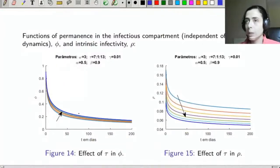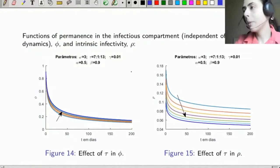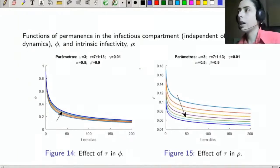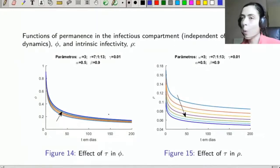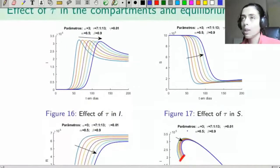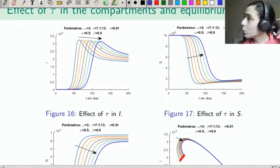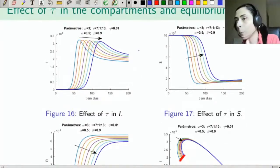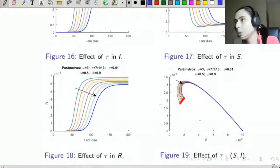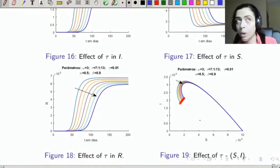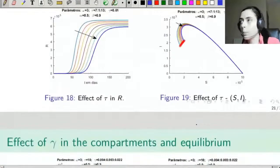Regarding τ, it has a small influence on the permanence function, slightly increasing φ and decreasing the intrinsic infectivity ρ. These two combined effects make τ produce almost a translation effect — it translates the peak forward in time, modifying its profile very little. The trajectories are very similar when varying τ, which makes sense because in the integer-order case, τ is the mean removal time.